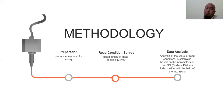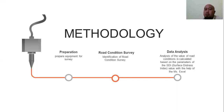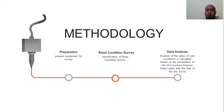The methodology: first is preparing equipment for the survey. Second is the road condition survey — identification of road conditions on existing roads in Palembang. Third is data analysis — the value of road condition is calculated based on the parameter of SDI, the Surface Distress Index, using Microsoft Excel.